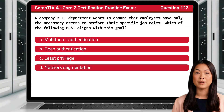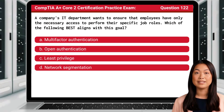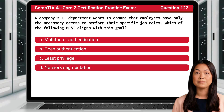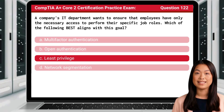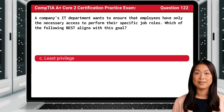Question 122. A company's IT department wants to ensure that employees have only the necessary access to perform their specific job roles. Which of the following best aligns with this goal? The answer is C: Least privilege.